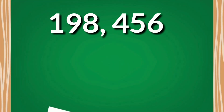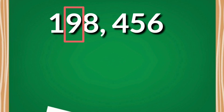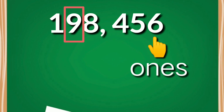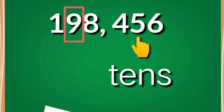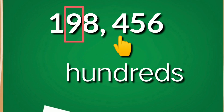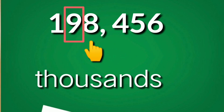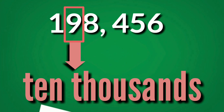We have one hundred ninety-eight thousand, four hundred fifty-six, and the boxed digit is nine. Starting from the rightmost digit: six is ones, five is tens, four is hundreds, eight is thousands, and nine — after thousands — is the ten thousands place. So the place value of nine in the number 198,456 is ten thousands.